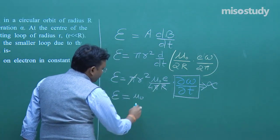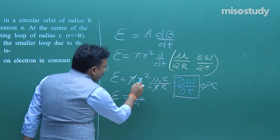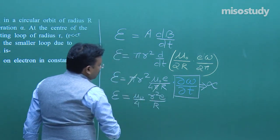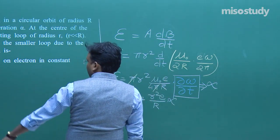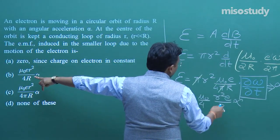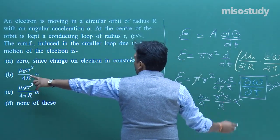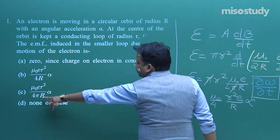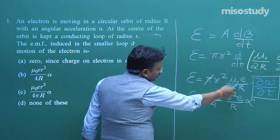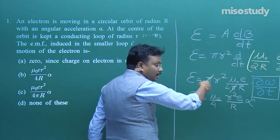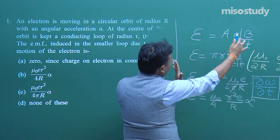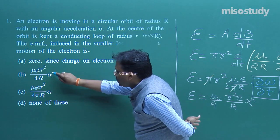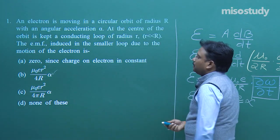Going back to class 11, dω/dt is nothing but angular acceleration α, which is given in the problem. So the final expression is: ε_induced = (μ₀eαr²)/(4R). The π cancels out. Comparing with the options, B is the correct option — option B has μ₀/4 without an extra π factor, which has been cancelled.